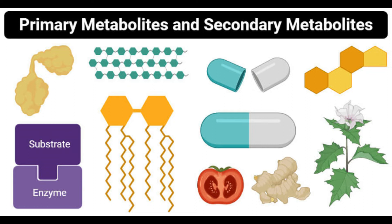In summary, primary metabolites are compounds directly involved in the metabolic pathways necessary for growth, development, and reproduction, also termed central metabolites. Secondary metabolites are organic compounds not directly involved in growth, development, or reproduction but essential in ecological and other activities, also termed specialized metabolites. Primary metabolites are produced during the trophophase, while secondary metabolites are produced during the idiophase.